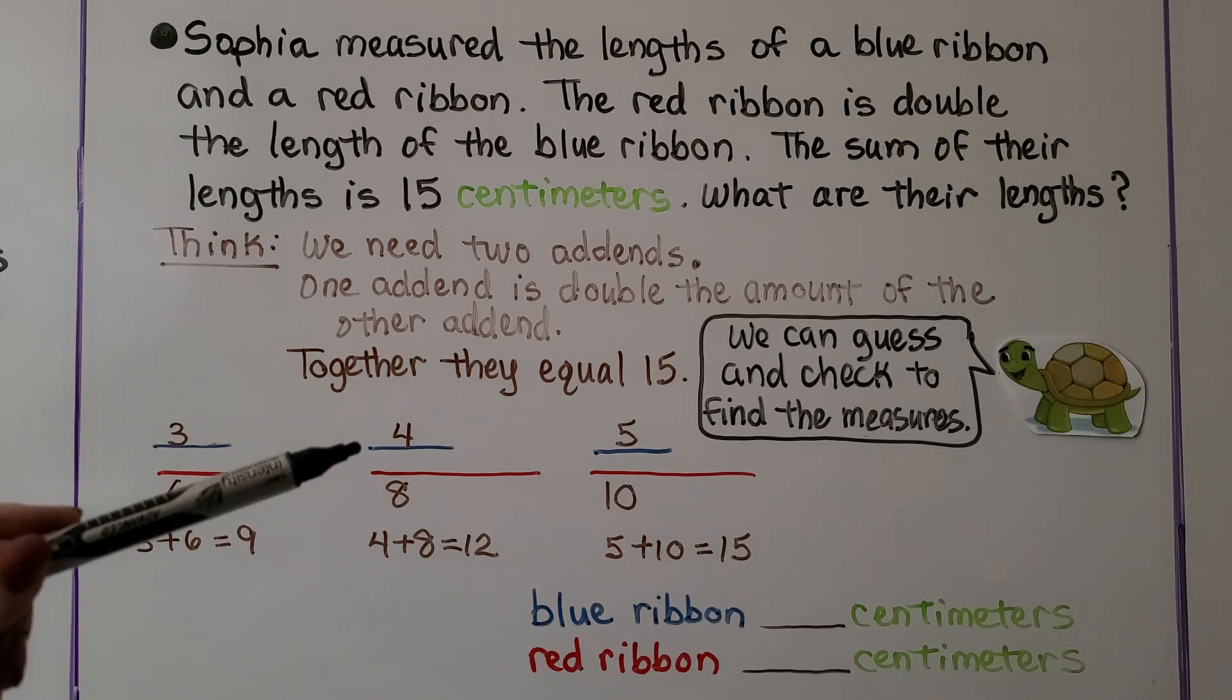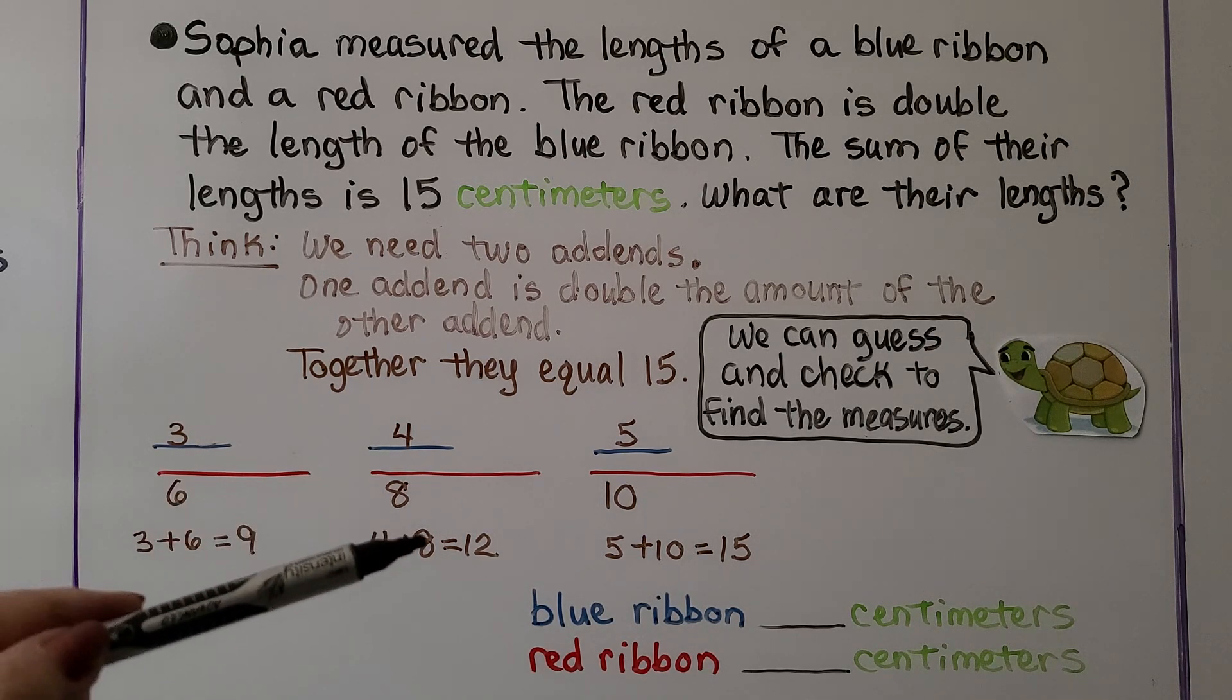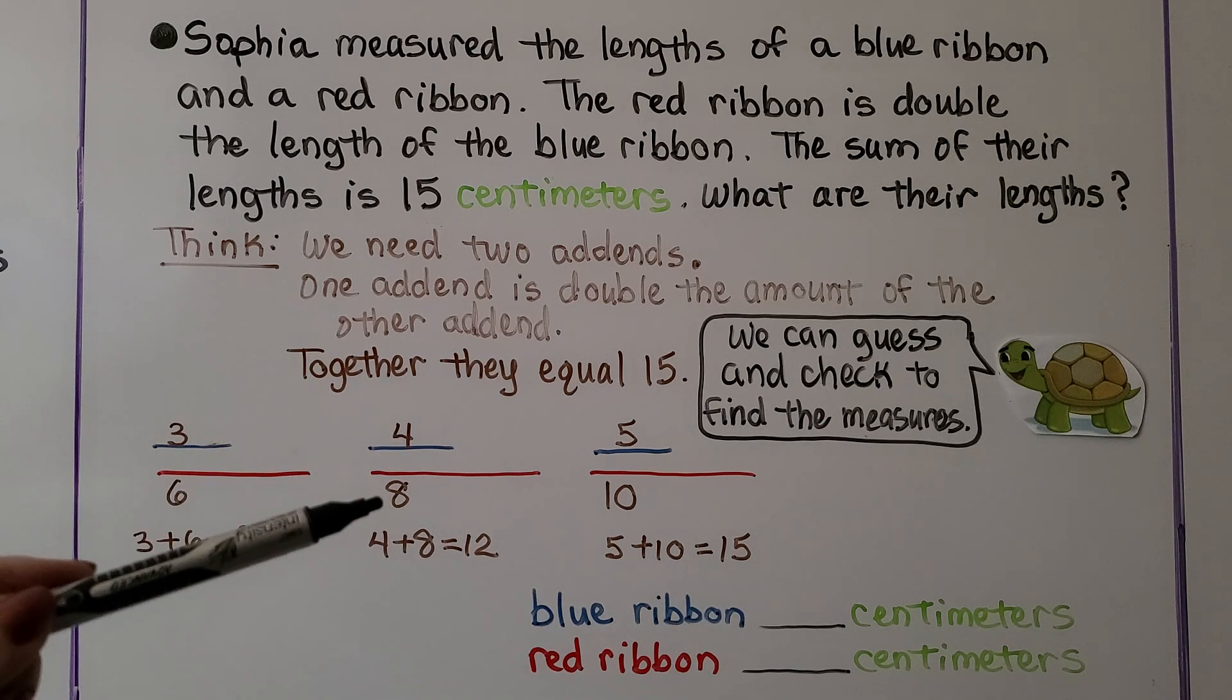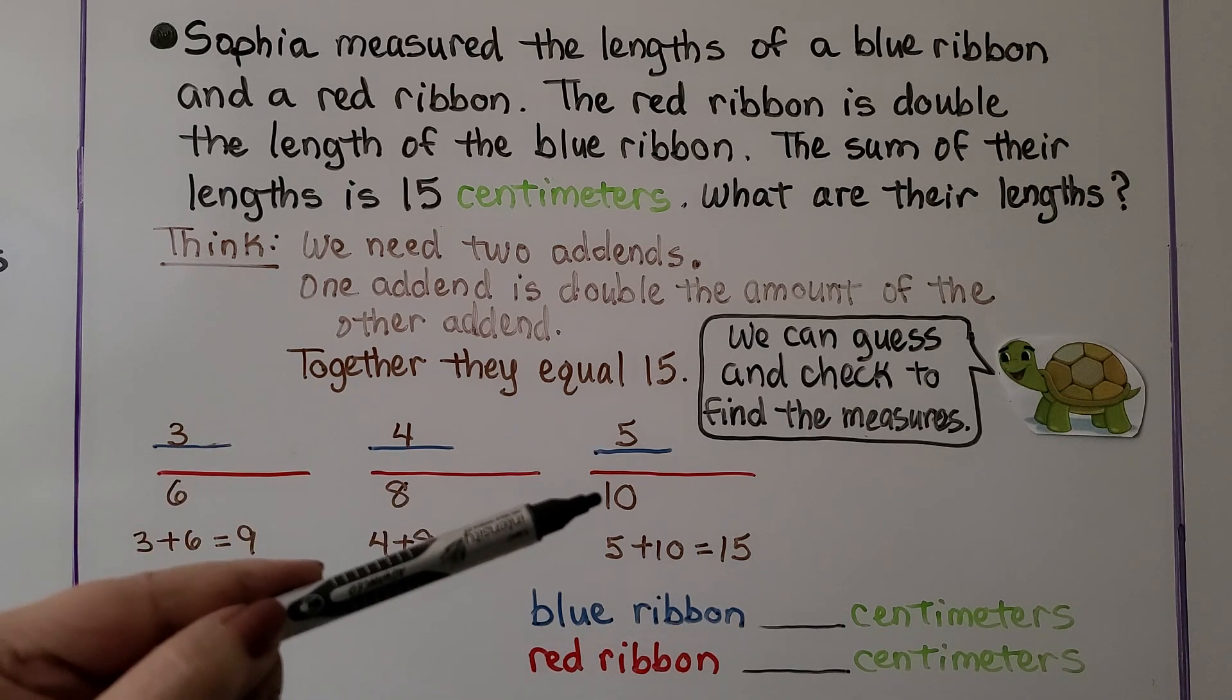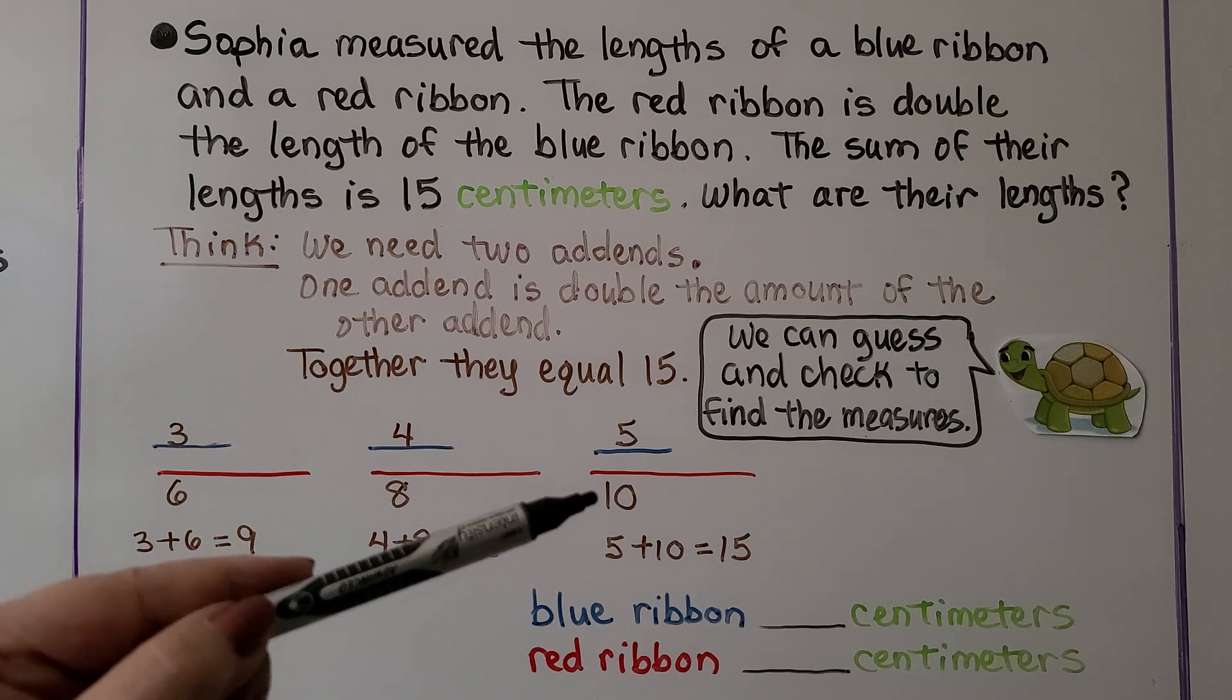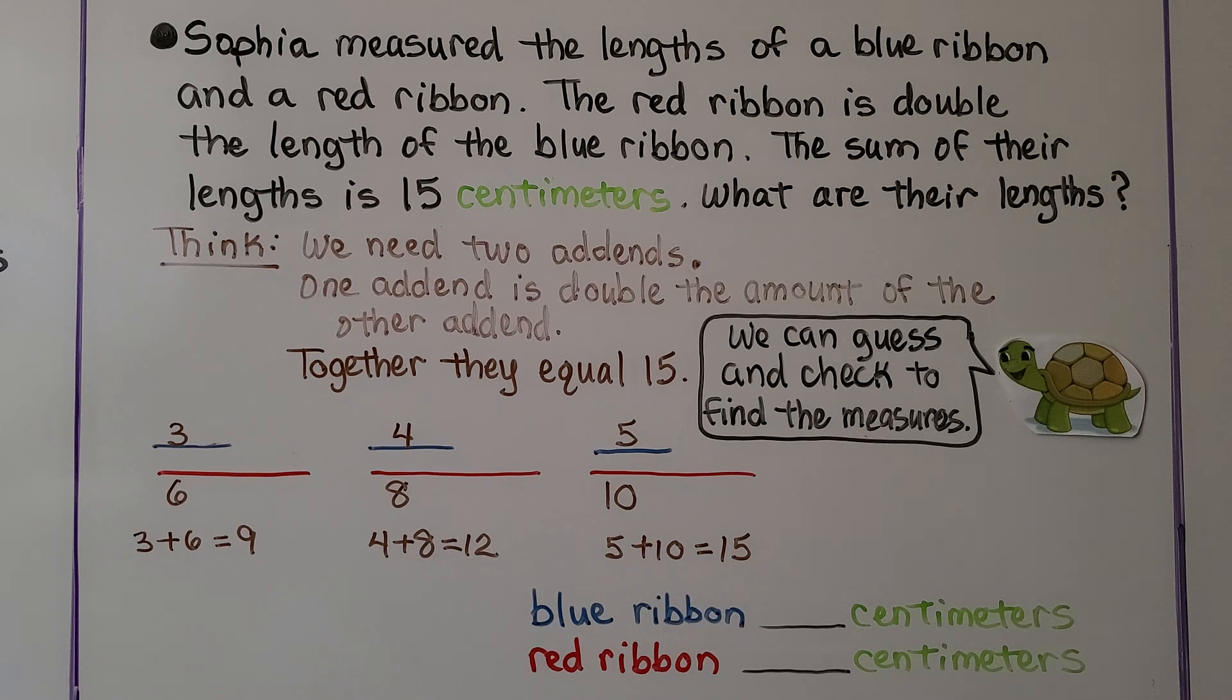If we make the blue ribbon 4, then double that would be 8. And 4 plus 8 is equal to 12. So it's not 4 and 8. When we try 5, double 5 would be 10. 5 plus 5 is 10. And when we add them together they do equal 15. That means the blue ribbon is 5 centimeters and the red ribbon is 10.